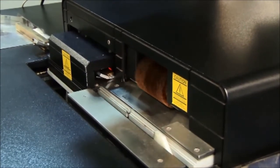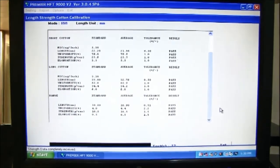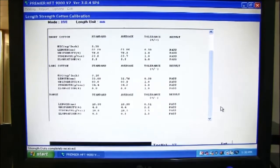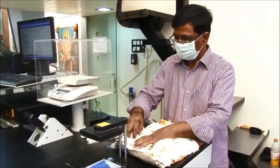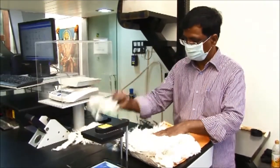Our high volume instrument testing HVI is capable of providing measurements of the following parameters: length and uniformity index, micronaire, strength and elongation, color and color grade, short fiber contents, and maturity index.